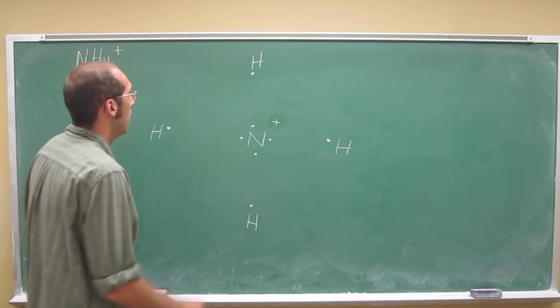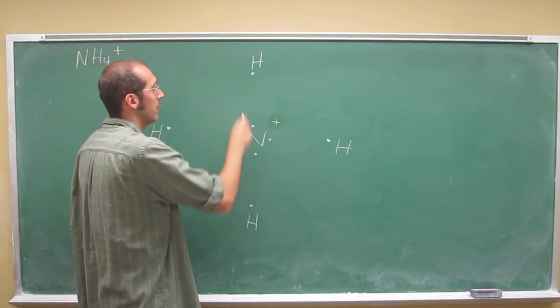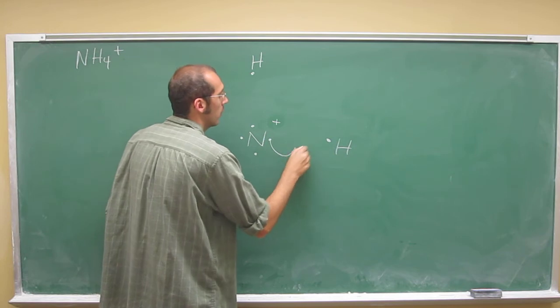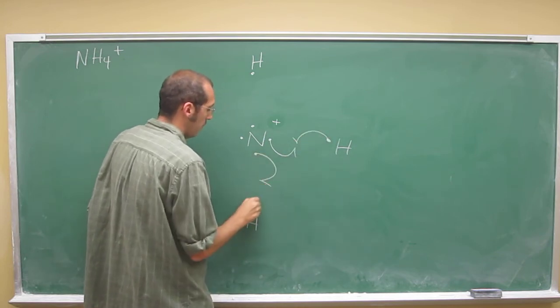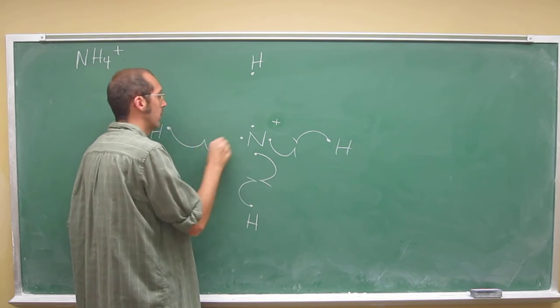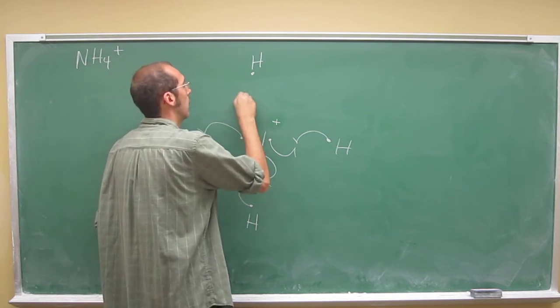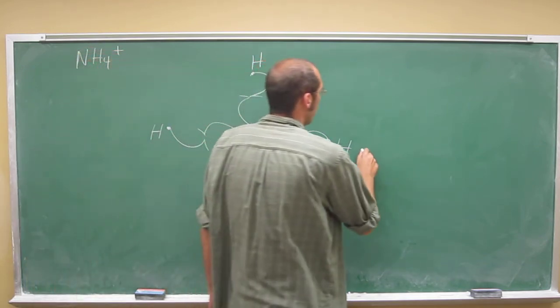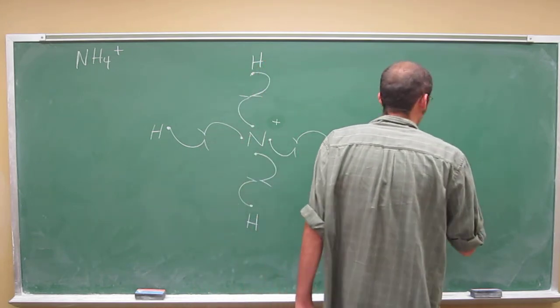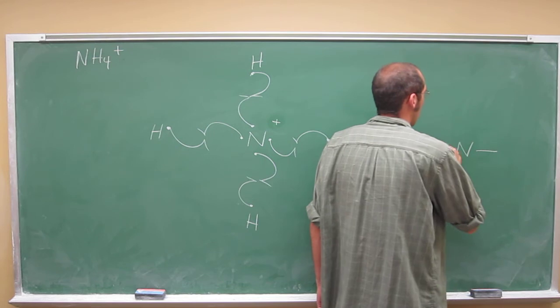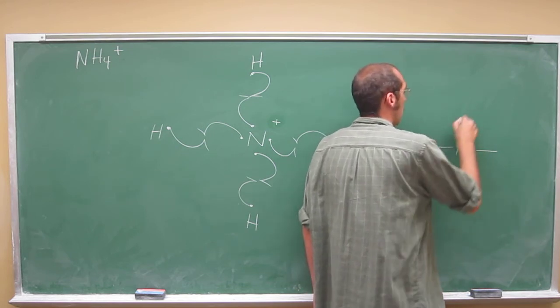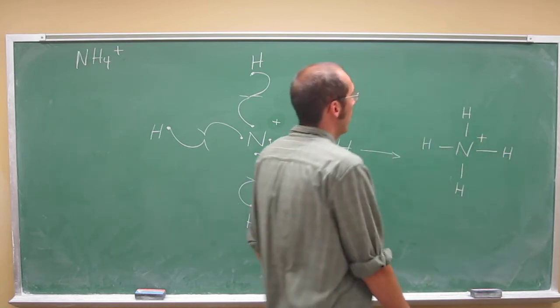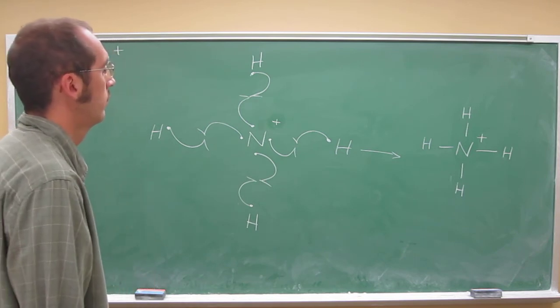So when we do that, we see that now nitrogen has space for all four of those hydrogen atoms. So let's go ahead and show the bonds forming, or the hands holding, whatever you want to think of it as. So when we do that, we're going to get this structure here with that positive charge still on the nitrogen atom, like that.